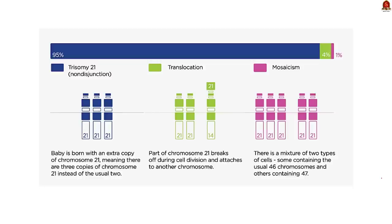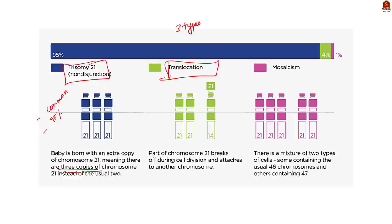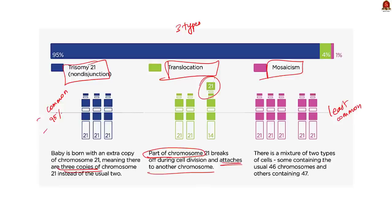There are three types of Down syndrome. First, Trisomy 21, the most common type affecting approximately 95% of people with Down syndrome — each cell has three copies of chromosome 21. Second, Translocation Down syndrome, caused when a part or whole extra chromosome 21 is attached to another chromosome rather than being a separate chromosome. Third, Mosaic Down syndrome, the least common type, where only some cells have an extra copy of chromosome 21. The effects of each type are usually similar.